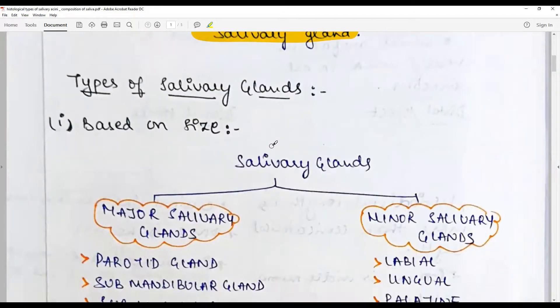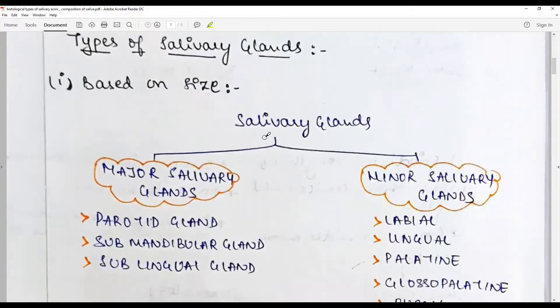Types of salivary glands: salivary glands are traditionally classified based on size or the volume of saliva they secrete as major salivary glands and minor salivary glands. Major salivary glands secrete the majority of the amount of saliva - parotid 30 percent, submandibular about 60 percent, sublingual about 8 to 9 percent.